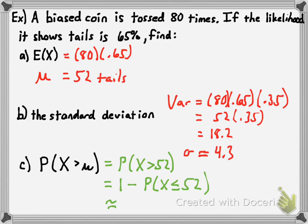The result is about a 45.8% chance that the number of tails would be greater than the mean — meaning you'd get 53 or more tails in that sample of 80 coin tosses.